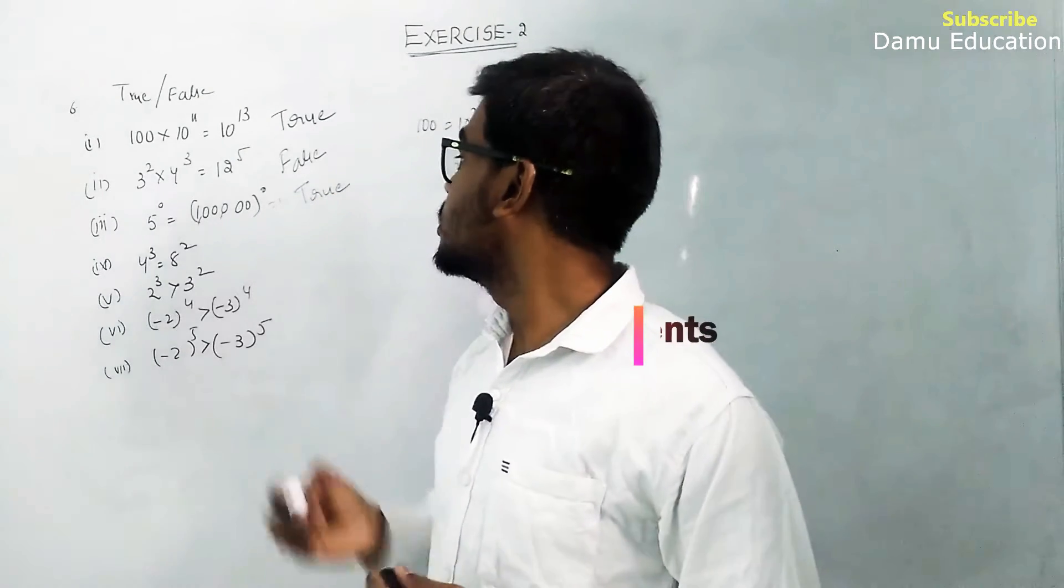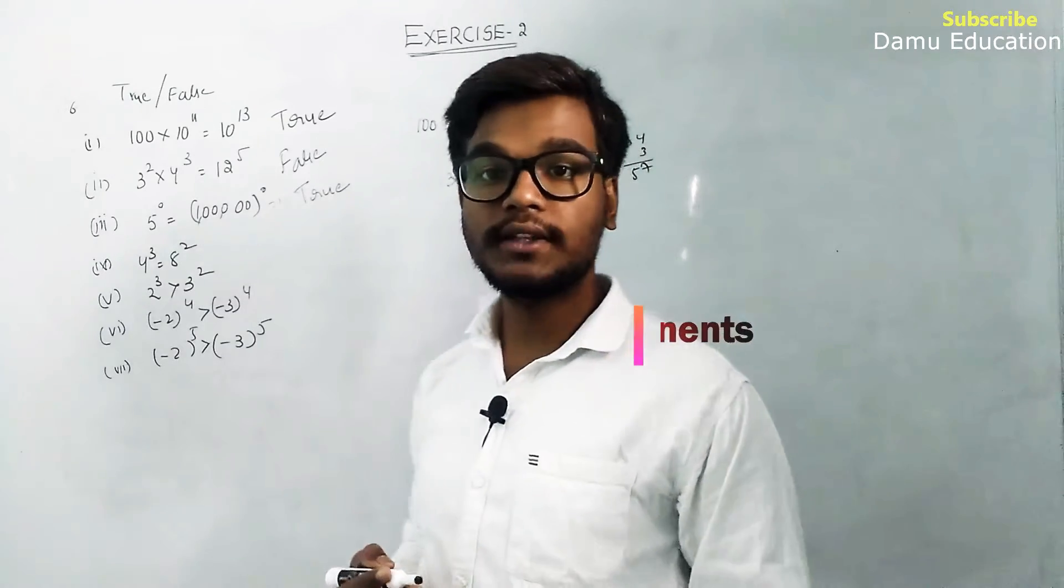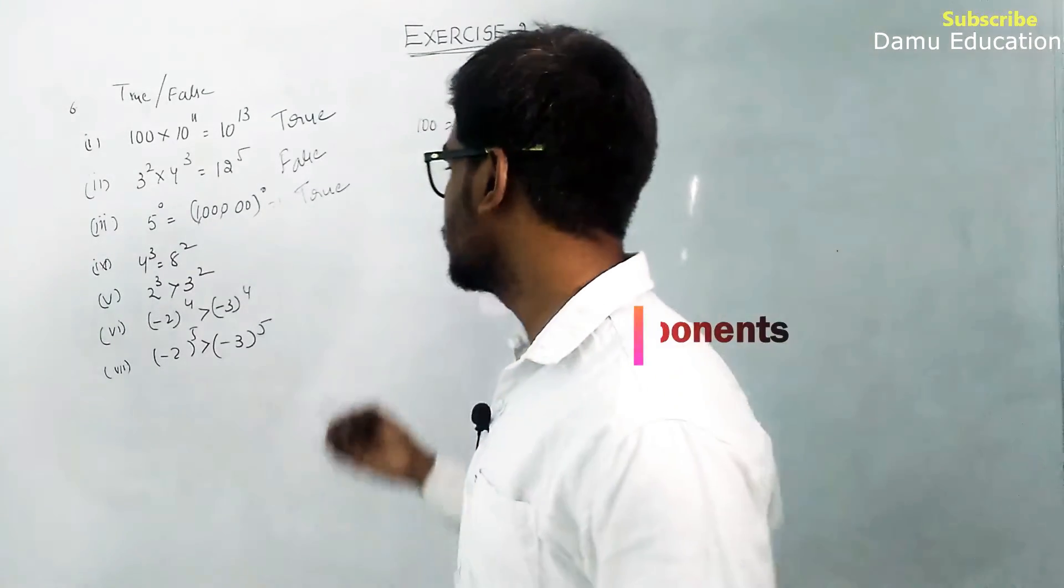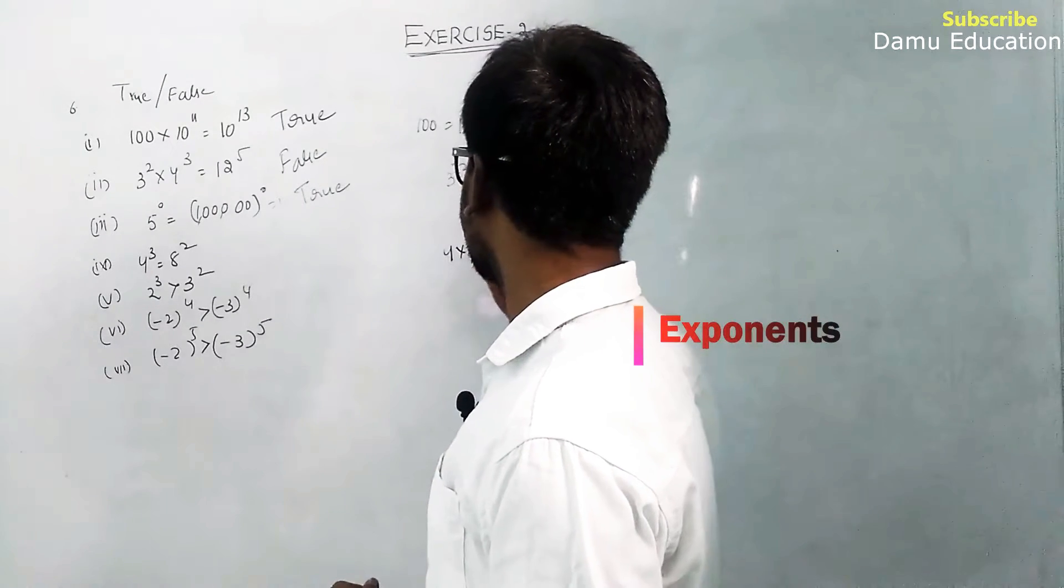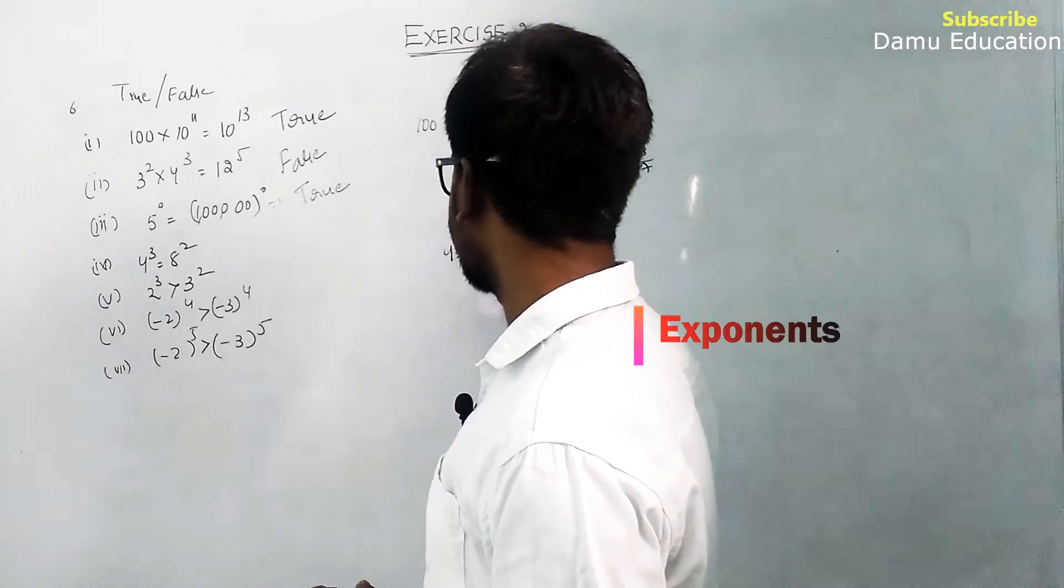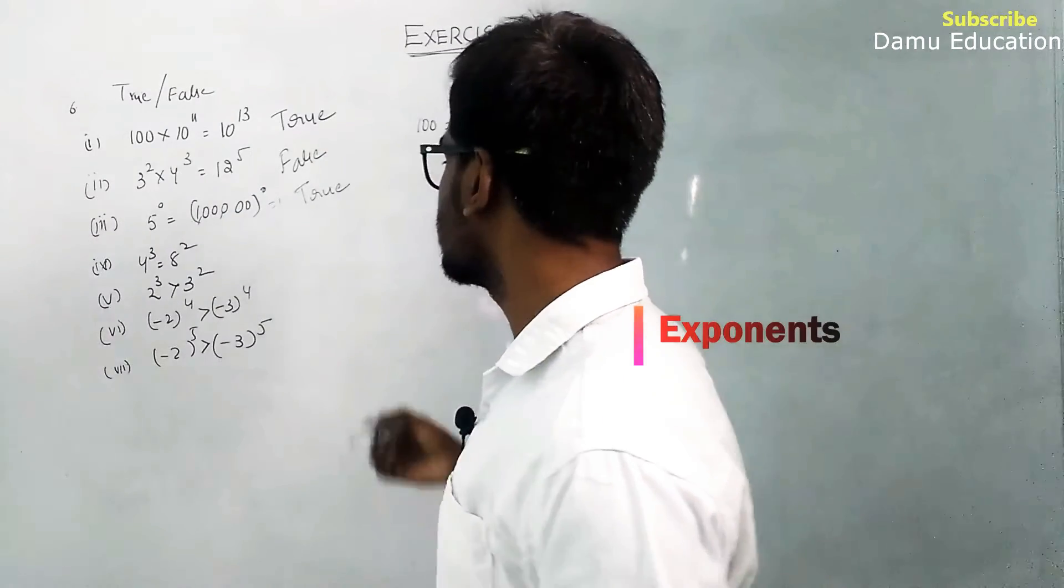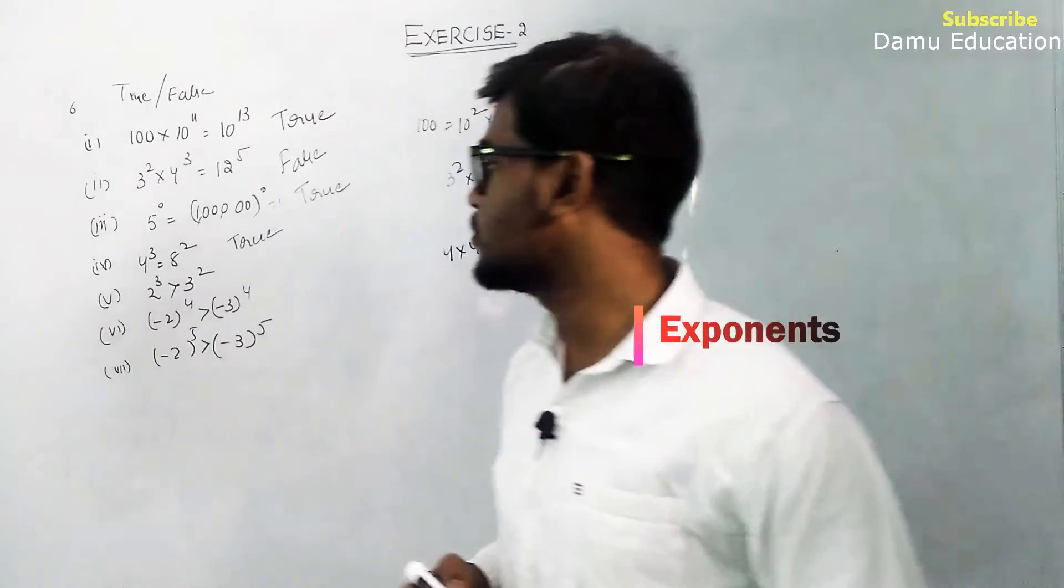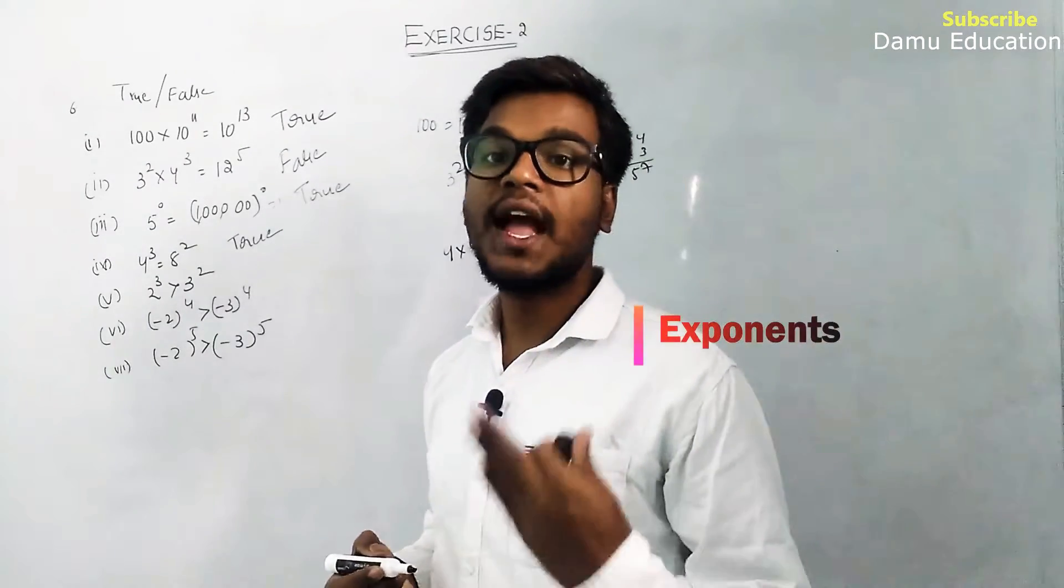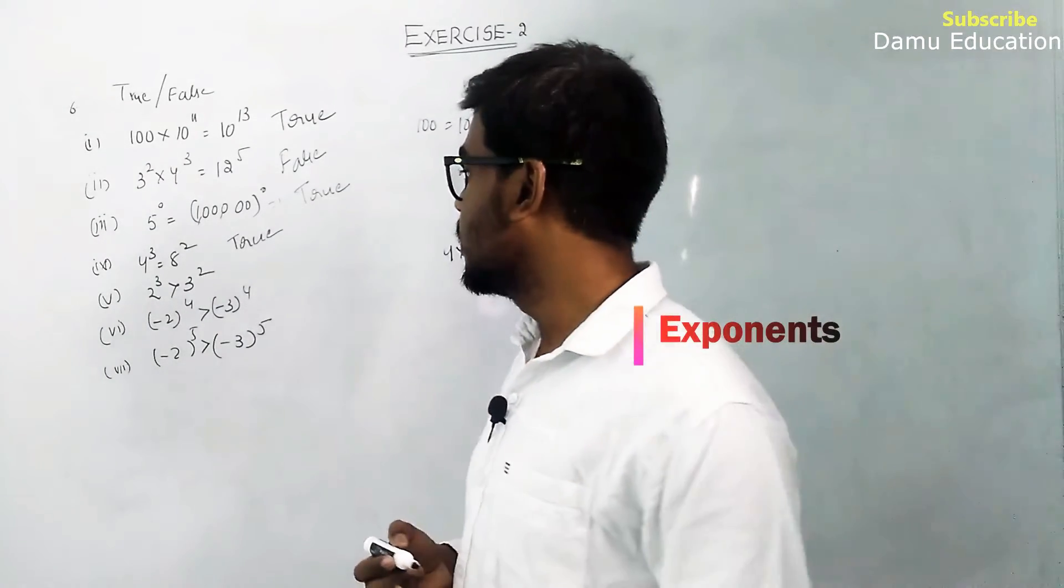Next: 4³ = 8². 4³ is 4×4×4 = 64, and 8² is 8×8 = 64. So this is also true.